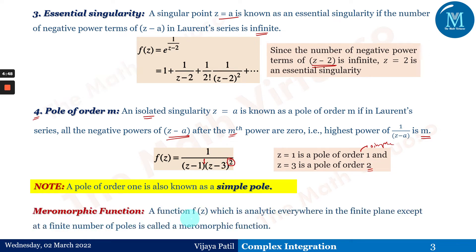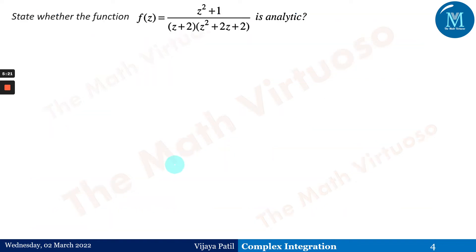A meromorphic function is a function f(z) which is analytic everywhere in the finite plane except at a finite number of poles. This definition gives you the gist of singular points. You may face different examinations where you will solve singularity problems in MCQ format, so let us go and solve a simple type of example.